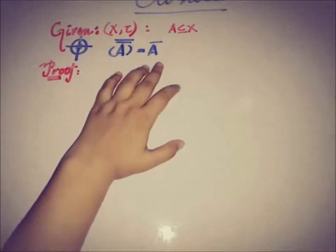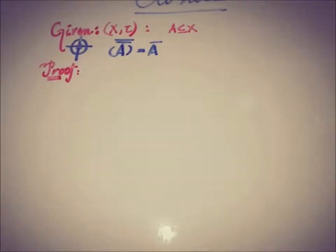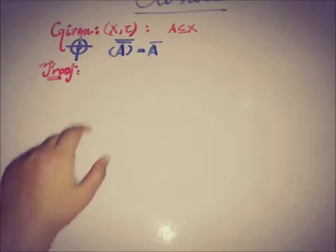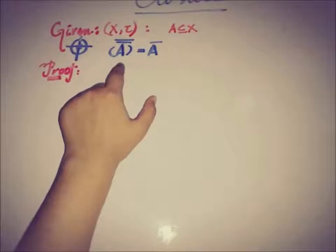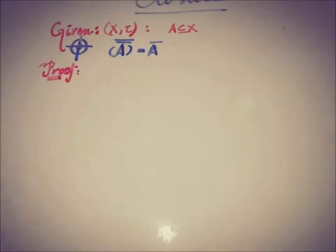So what we have to prove is that the closure of a closed set is also a closed set. Here it is. So, as by definition of the closure of a set, we know that the closure of a set is the intersection of all the closed supersets.